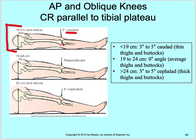So caudad at a lower measurement, 19 to 24 perpendicular, and then 5 degrees cephalad. Thin thighs and buttocks is 3 to 5 degrees caudad — usually just go to the 5 degrees, as a 3 degree is hard to maintain on your tube head. It's easier to get a 5 degree than a 3 degree, but know that it should be 3 to 5.